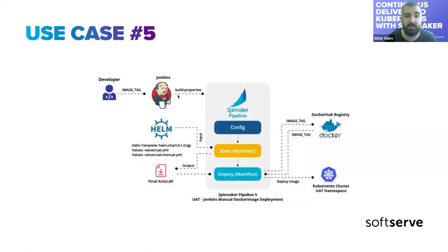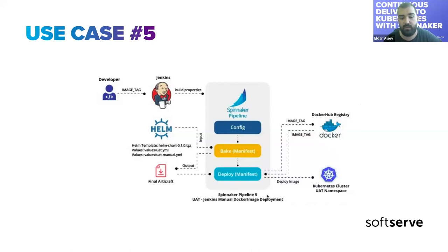Another case: you can trigger a Spinnaker pipeline with some parameters, and it will take some Helm charts and inject the image on the deploy stage, using the image as an artifact. We'll look at how this works — you won't need to hard-code the image version in your manifest because you can override it with Spinnaker. These are just a couple of examples; you can build your pipelines according to your needs. You could see there are many different ways this could be done.